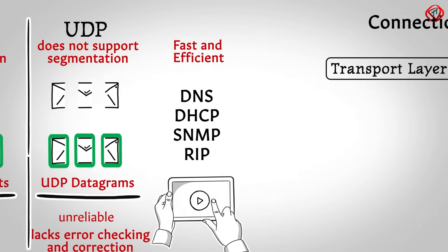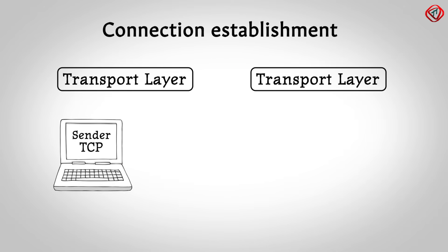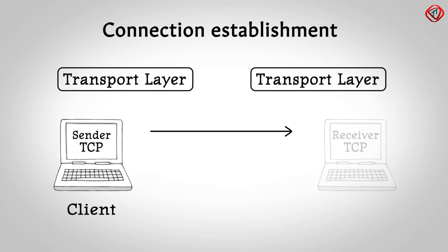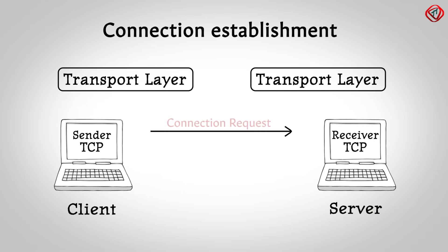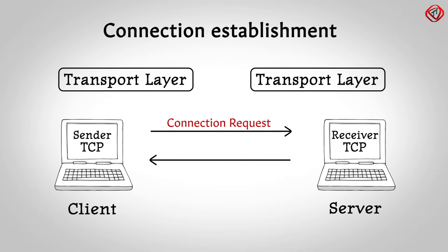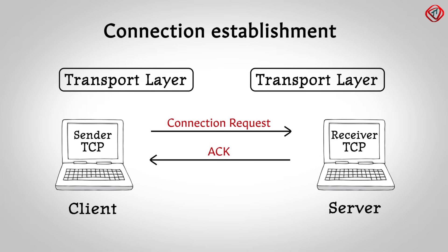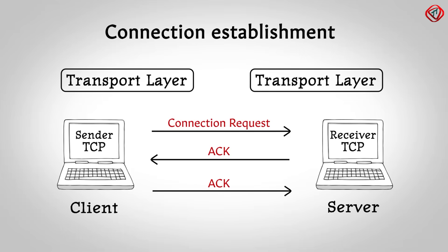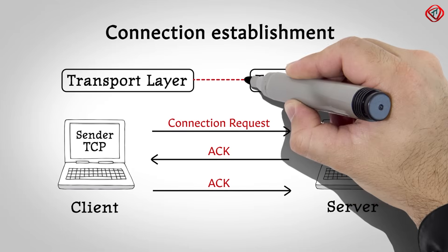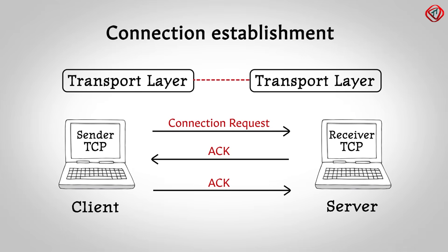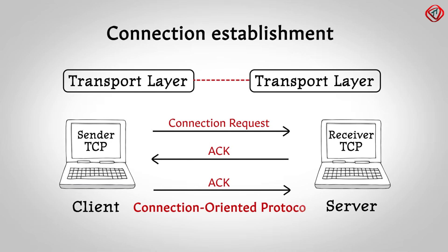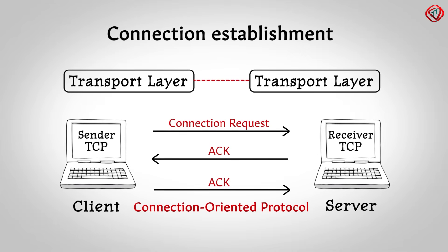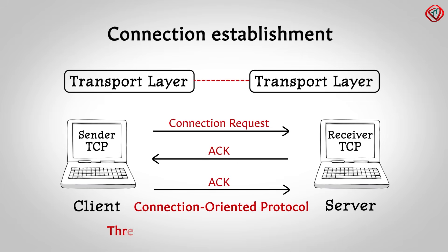In the connection establishment phase, the sender TCP or client sends a packet to the receiver TCP or server requesting a connection. The server then sends an acknowledgement to the client. The client further acknowledges the server, completing the process of connection establishment. Since a connection is set up before data transmission, TCP is a connection-oriented protocol. And the connection establishment process is called the three-way TCP connection handshake.